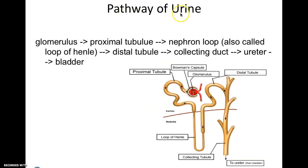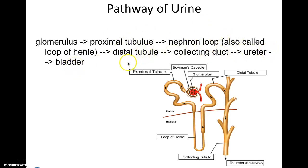The pathway of urine: glomerulus → proximal tubule → nephron loop → distal tubule → collecting duct → ureter → bladder. That's the pathway in which it flows.